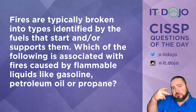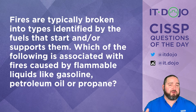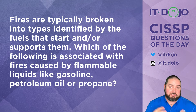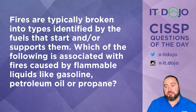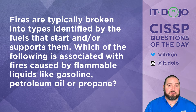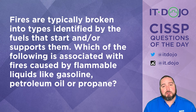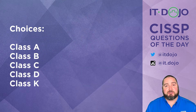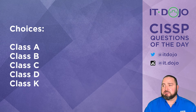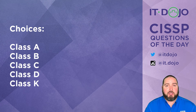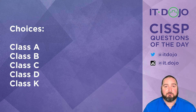Now here comes question number two. When talking about fire suppression, we usually break fires down into different classes using letters based upon the types of materials that support the fire. Given the list you see here, which of the following deals with fires that are started or supported by gasoline, petroleum, or oil-based fuels? Go ahead and figure out which one it is, click pause if you need to, then click play and we'll talk it through.